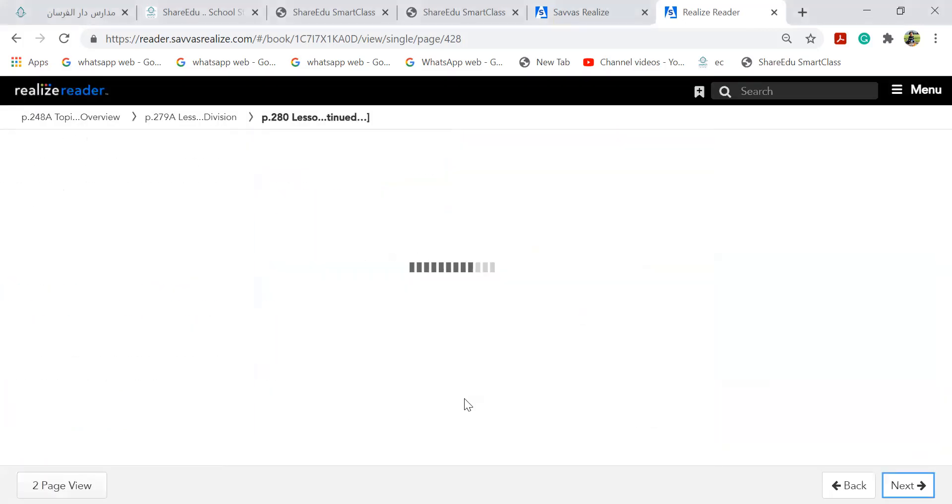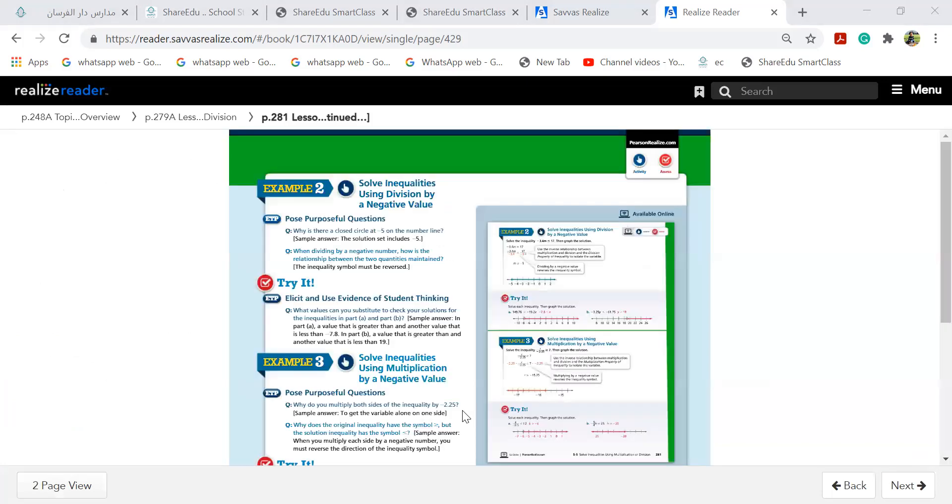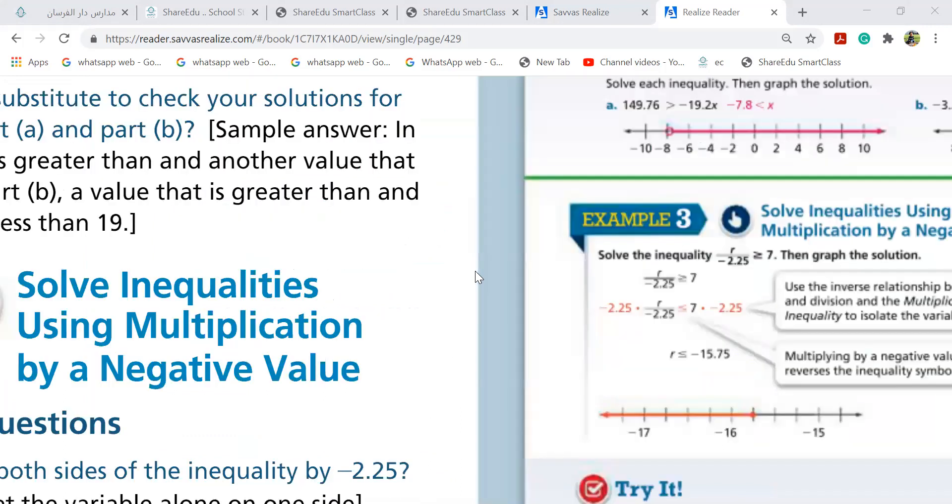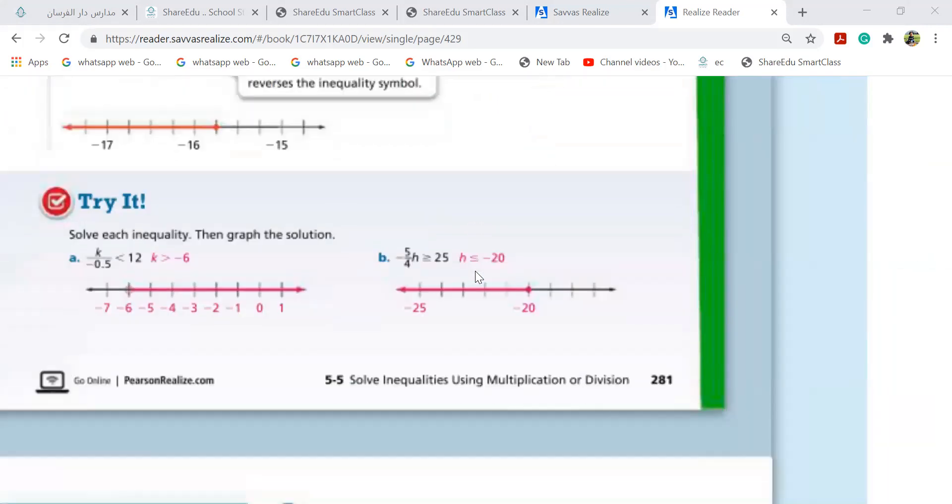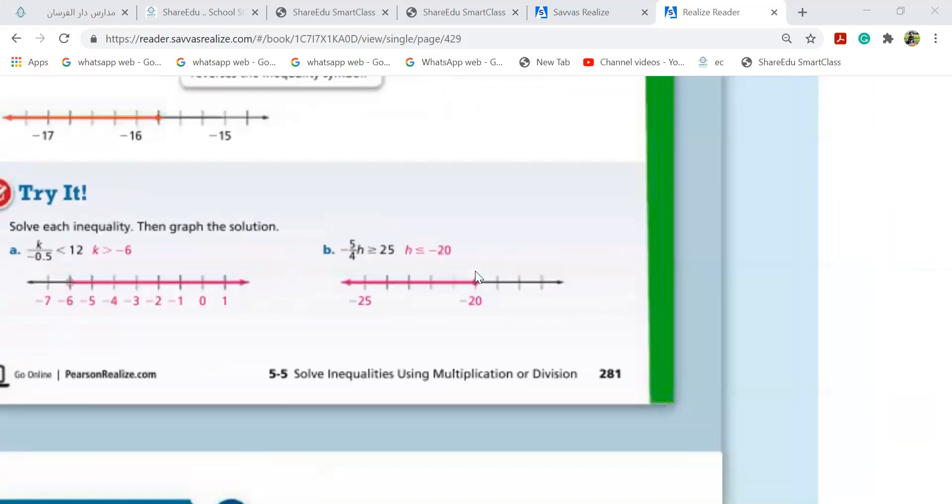Let's go to next page. Hi Majdolene. Look at these questions carefully, because you were not in the beginning with me here. The question is A. K over minus 0.5 is less than 12. Where will you send this, Majdolene? The division becomes what?